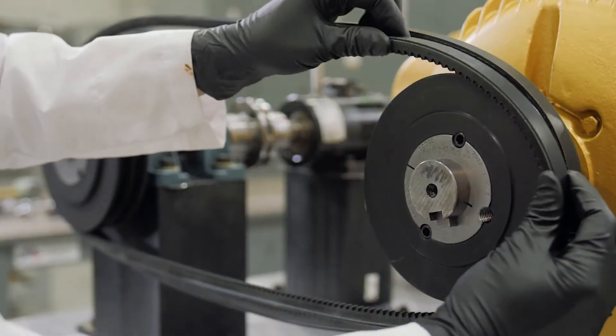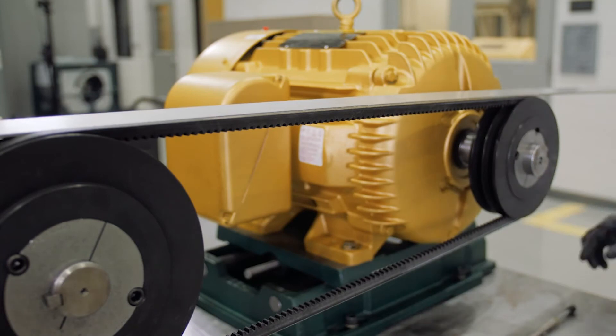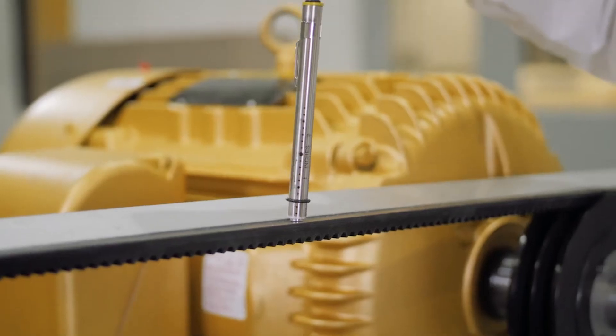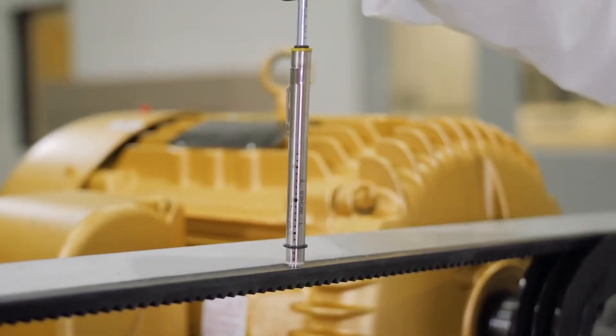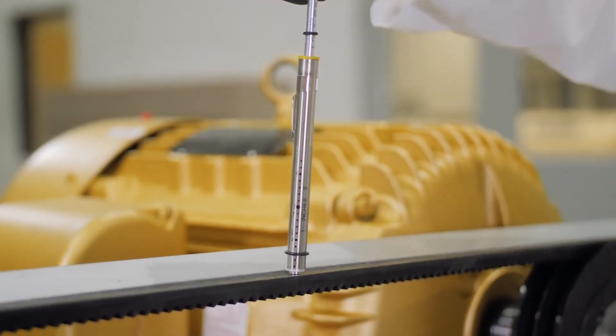Seat the belts within the shiv grooves. For single belts, place a straight edge on the outside of each shiv. Next, at the center of the belt span, depress the tension meter until the large O-ring is even with the bottom of the straight edge.